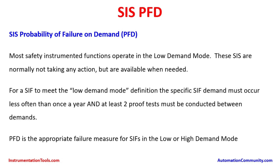Under normal operating conditions, only the control part — the BPCS, the basic process control system — is doing the action of the plant operations. For a SIF to meet the low demand mode definition, the specific SIF demand must occur less often than once a year and at least two proof tests must be conducted between the demands. The demand can occur once in a year and at least two proof tests can be conducted between any demands, meaning any action which is required to operate.